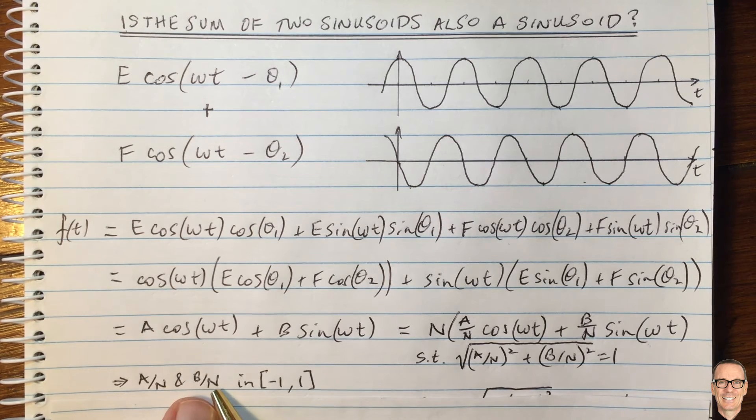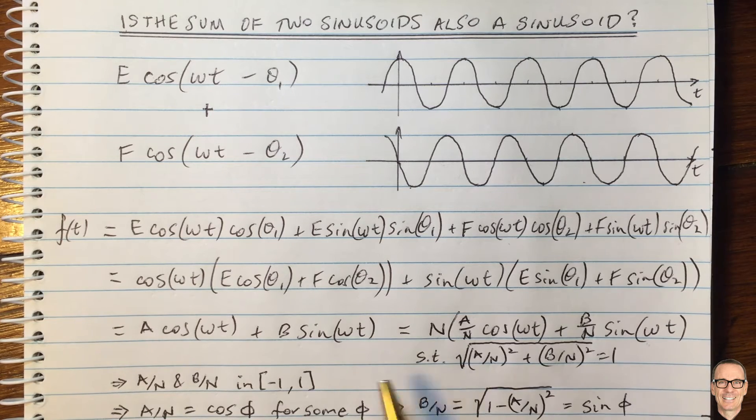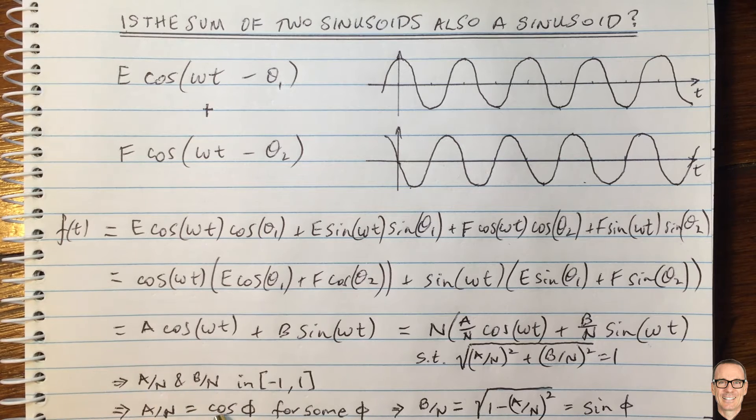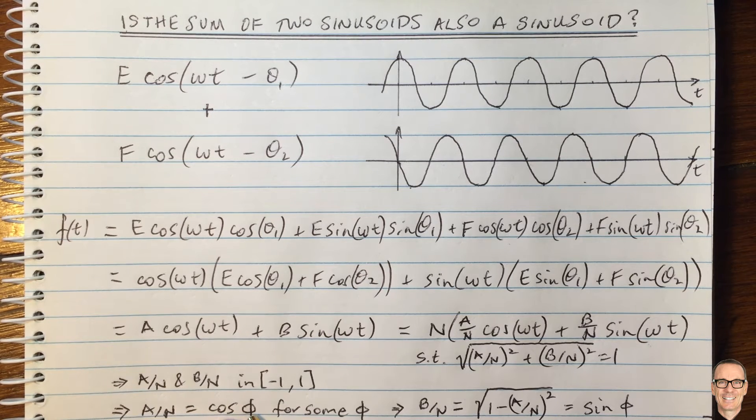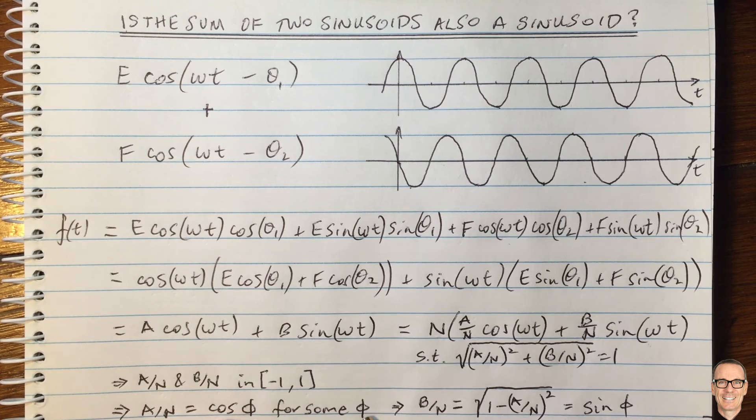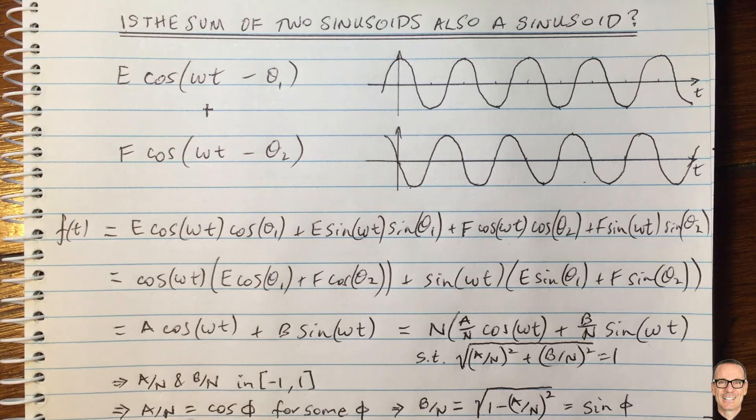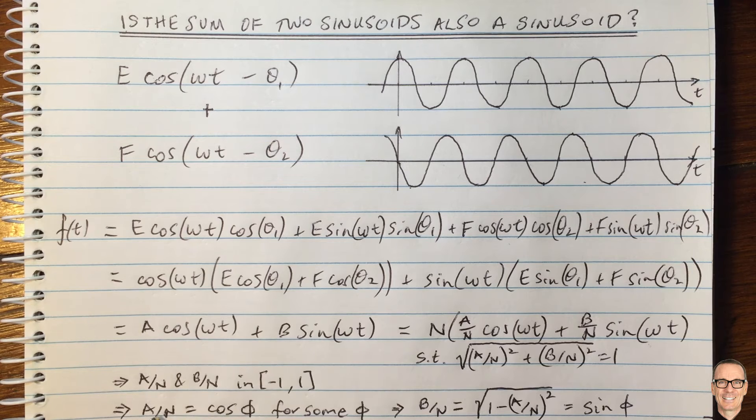Now, because they're between minus 1 and 1, we know that we can write A on N, or either of them, but let's pick A on N. We can write A on N as cos of phi for some phi because cos of phi is also between minus 1 and 1. So we can definitely find a phi that matches so that cos of phi gives A on N.